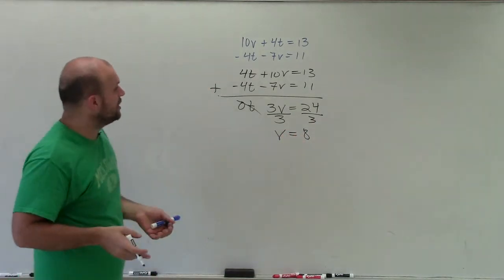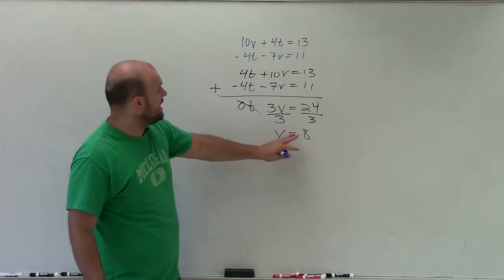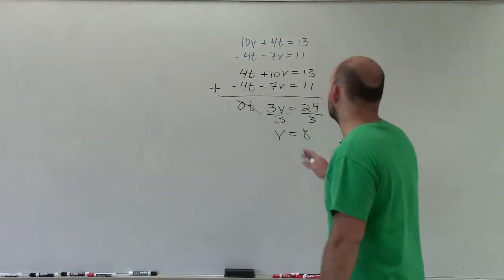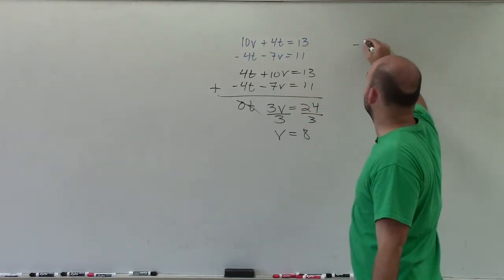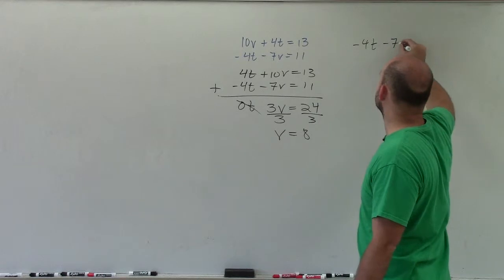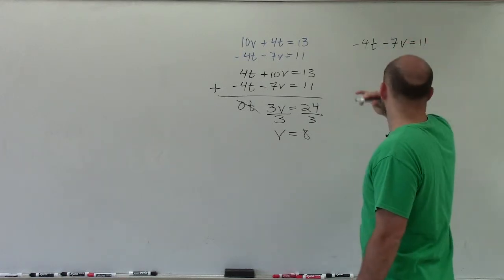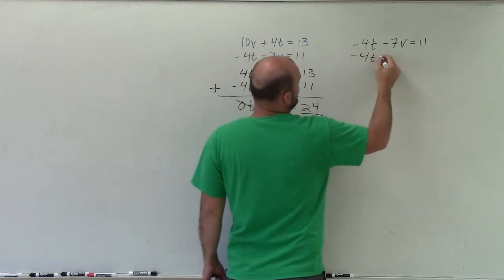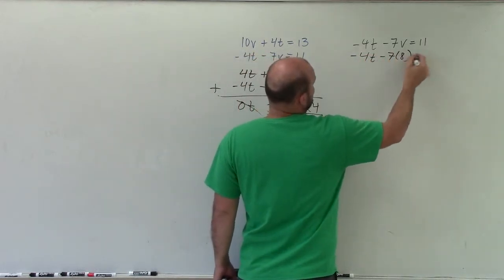Now, to solve for t, all I simply need to do is take this and add it into one of my equations. So I can pick any equation I want to. I will pick the second equation. So it says negative 4t minus 7v equals 11. Let's put 8 in for v. So negative 4t minus 7 times 8 equals 11.